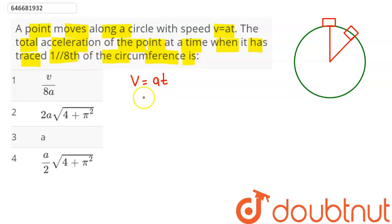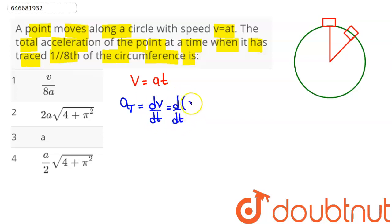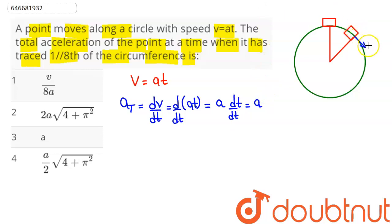We need to find the total acceleration at this point. First, the tangential acceleration, which equals the rate of change of velocity — dv/dt. Since velocity varies as a function of time as at, this gives us a·(dt/dt), so dt cancels and we get tangential acceleration equal to a.